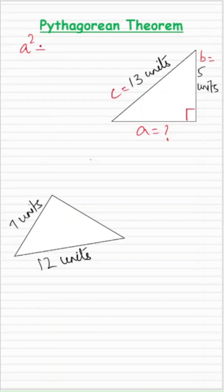The Pythagorean theorem says that A² + B² = C². That means the sum of the squares of the two sides of the right angle triangle is equal to the square of the hypotenuse.